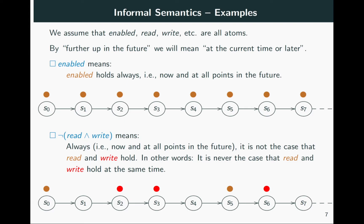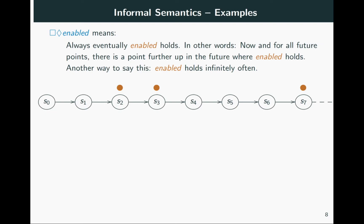The next example says always eventually enabled holds — the pattern discussed in the introduction. It means that considering each point in time, now or in the future, there is a point further up in the future where enabled holds. For example, if we are at a given state, we see that at a later point in time enabled holds, and this must hold indefinitely on the entire infinite path. Another way to express this is that enabled holds infinitely often: as you traverse the path, it will infinitely often be the case that one sees enabled holding.